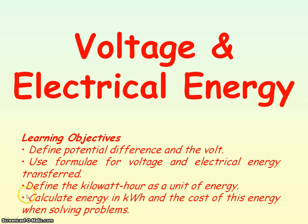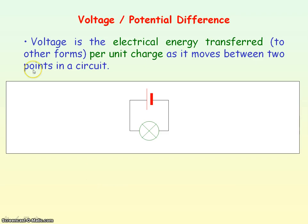We're going to be looking at voltage or potential difference and electrical energy transferred. Voltage is the electrical energy transferred per unit charge as the charge moves between two points in a circuit. You can also consider it to be the electrical work done per unit charge.